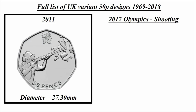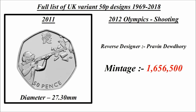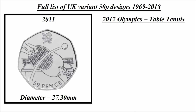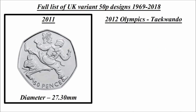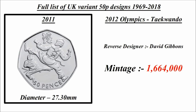Olympics shooting: reverse designer Pravin Duthari, mintage 1,656,500. Olympics table tennis: reverse designer Alan Lindsdell, mintage 1,737,500. Olympics taekwondo: reverse designer David Gibbons, mintage 1,664,000.